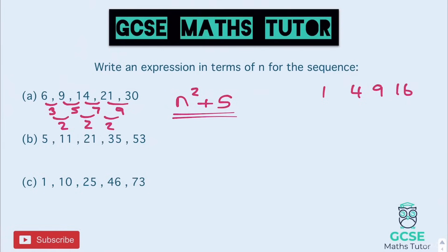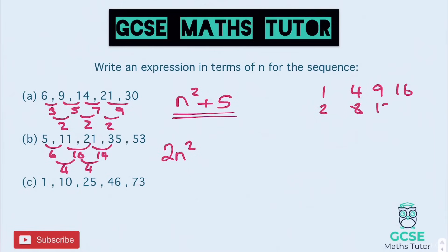On to the next one. 5 to 11 is 6. 11 to 21 is 10. 21 to 35 is 14. So here we have a second difference of 4. Halving that gives us 2n squared. Let's double the square numbers: so 2n squared gives 2, 8, 18, 32. To get from 2 to 5 is add 3. 8 to 11 is add 3. So it's 2n squared plus 3.